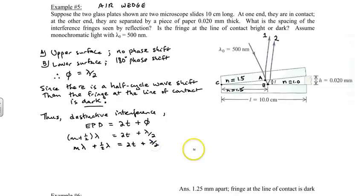If you rewrite this, m lambda plus a half wavelength equals 2t plus a half wavelength. This half wavelength here and this half wavelength here cancel out, so you end up with m lambda equals 2t.